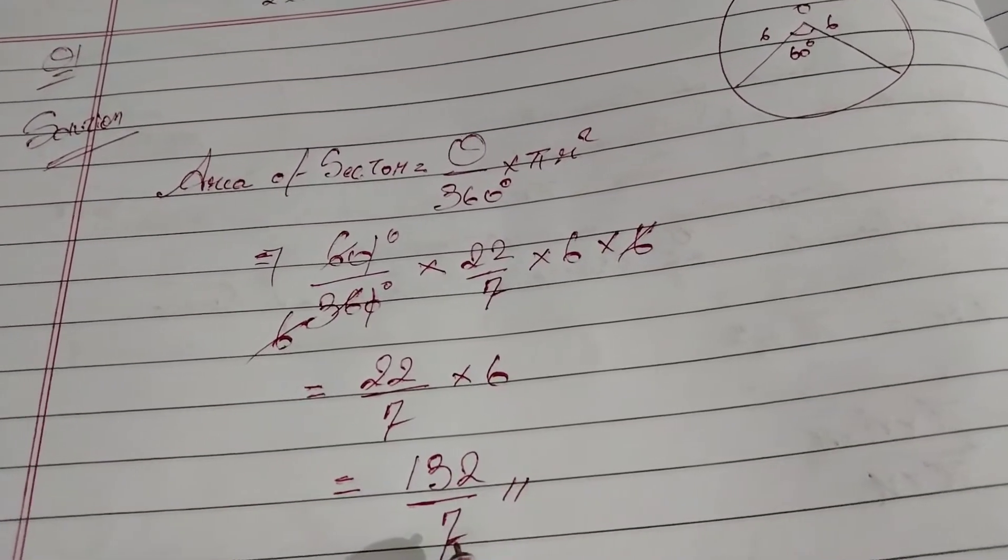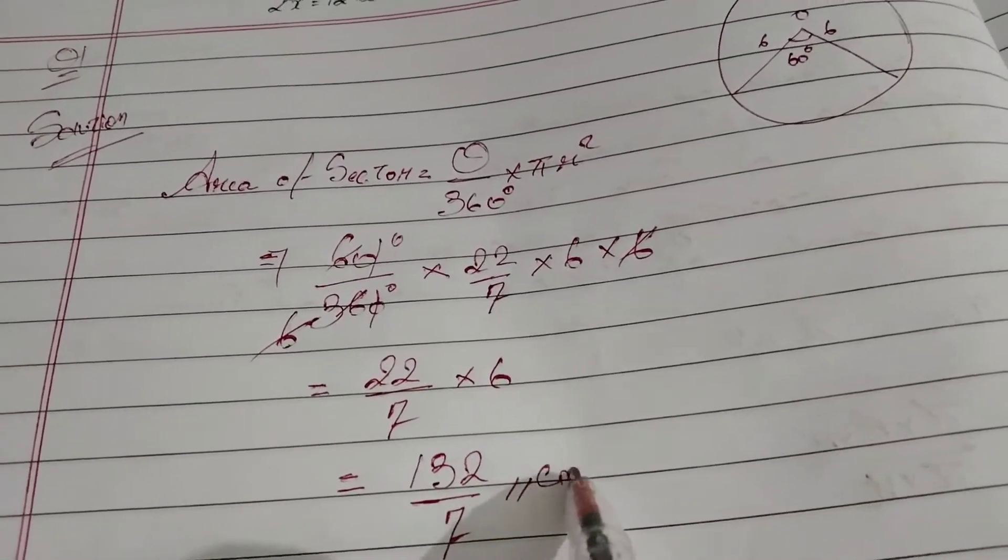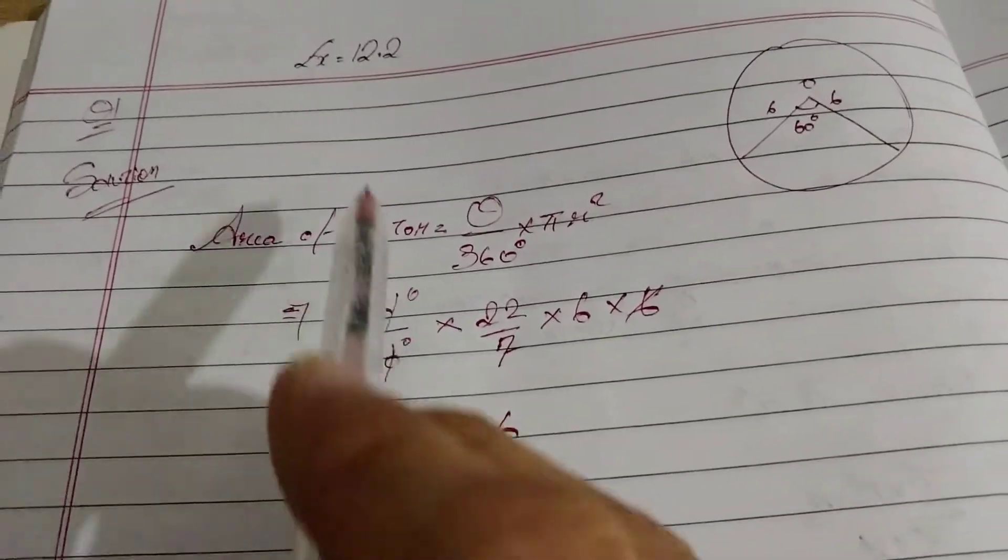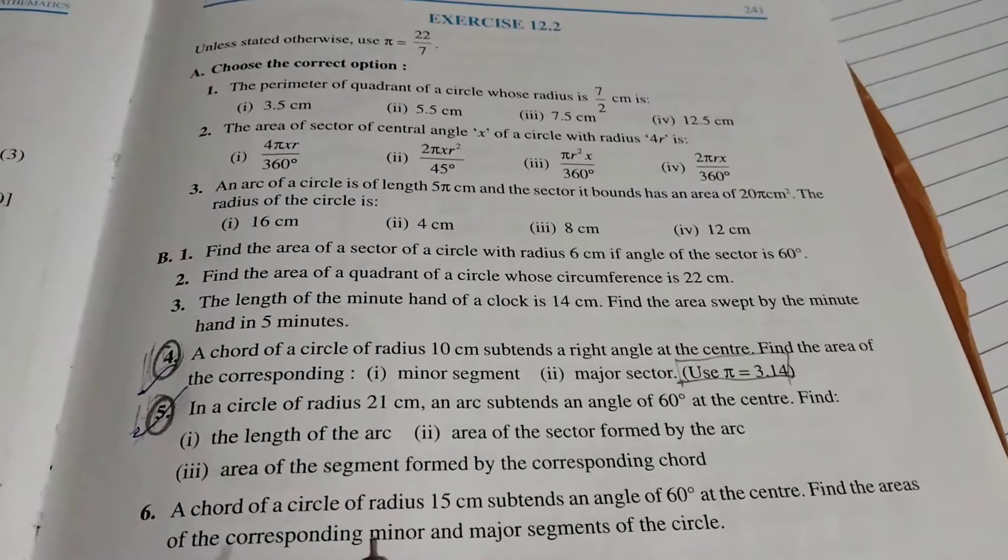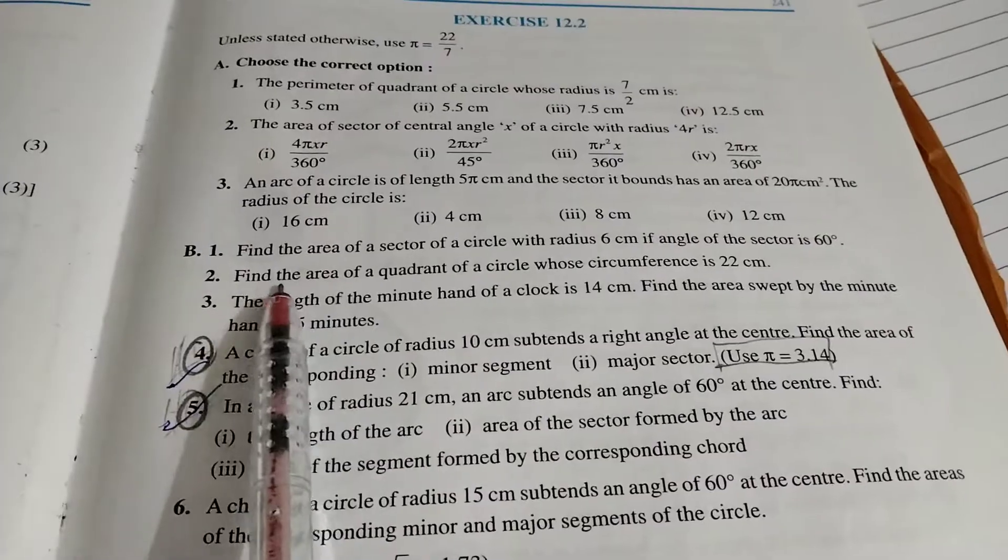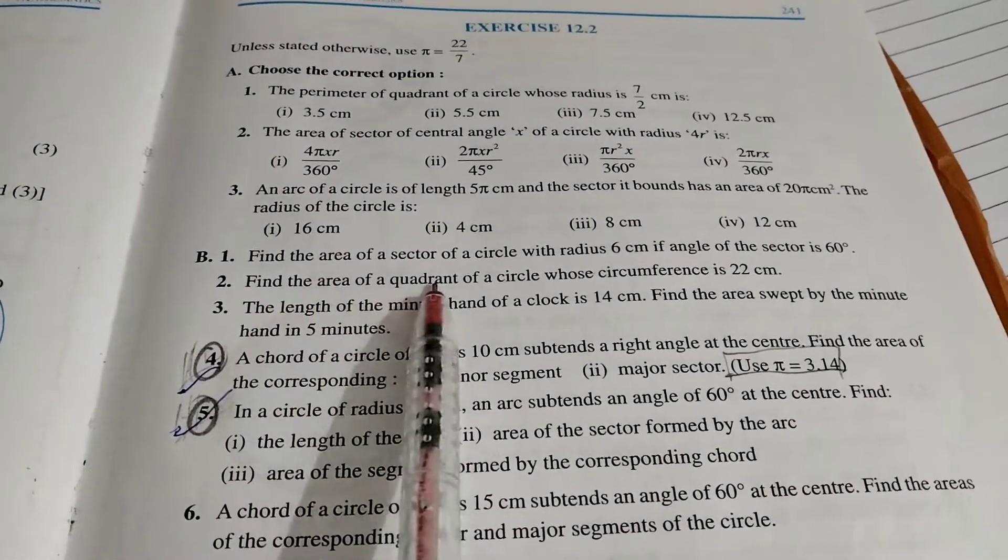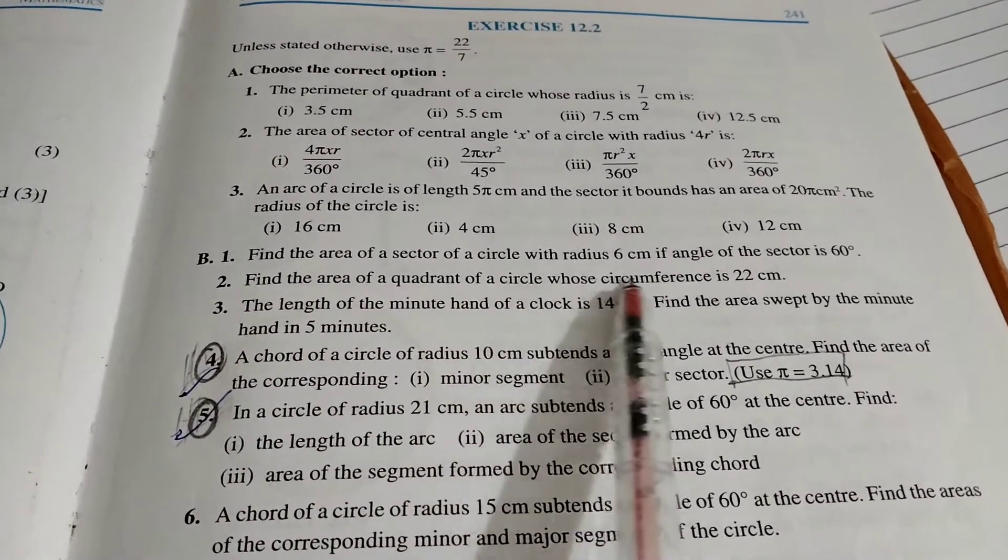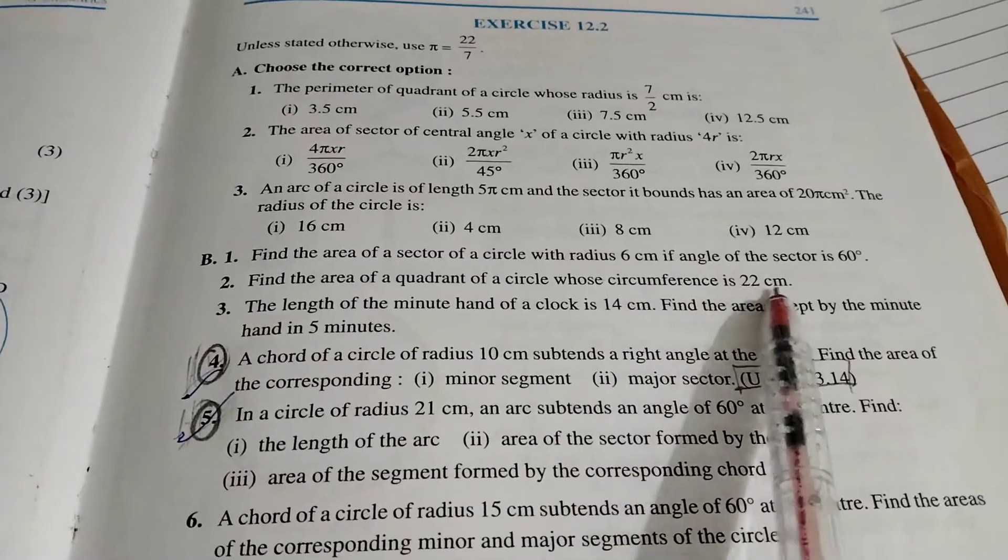132 by 7 centimeter square. 12.2 question number 1 done. Now we are going to do 12.2 question number 2. Find the area of a quadrant of a circle whose circumference is 22 centimeter.